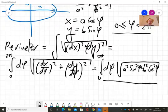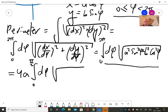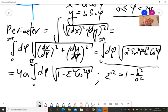I can also write the same formula as follows. It is 4a, the integral between zero to pi over two of d phi, square root of one minus epsilon squared cosine squared phi. And epsilon squared is one minus b squared over a squared.